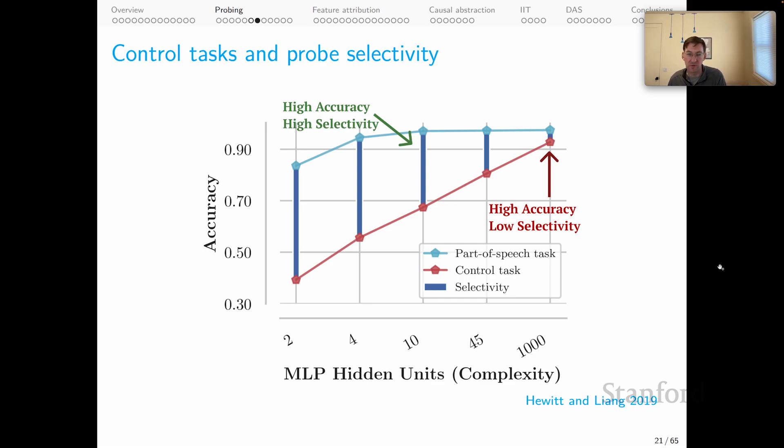And Hewitt and Liang offer this kind of summary picture, which essentially shows that the most reliable probes in terms of giving you insights will be very small ones here. This is a model with just two hidden units. That gives you very high selectivity. There is likely to be a very large difference between performance on your task and the performance of this control model when the model is very simple. On the other hand, if you have a very powerful probe model with many parameters, you'll have low selectivity because that model has such a great capacity to simply memorize aspects of the data set.